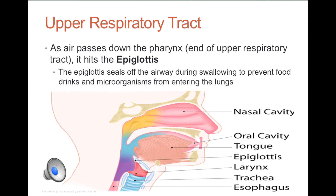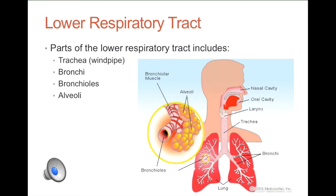The parts of the lower respiratory tract include the trachea, bronchi, and bronchioles. The trachea is the largest airway, which branches into two smaller airways — the left and right bronchi. These both lead into the lungs. The bronchi then branch into many smaller airways known as bronchioles. At the end of each bronchiole are thousands of small air sacs known as alveoli.